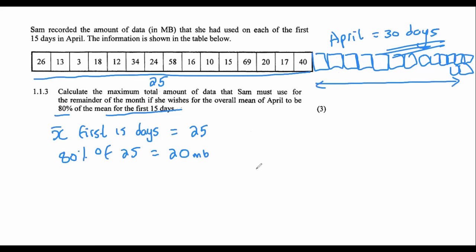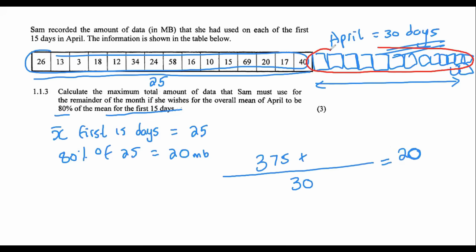If we wanted to calculate the mean, we know that we would have to add all the values. And then we would divide by the total number of values, which is 30, and we would like the average to be equal to 20. If you had to add up all of these, we don't know what that is, but we can just call it x. And there is our equation now.